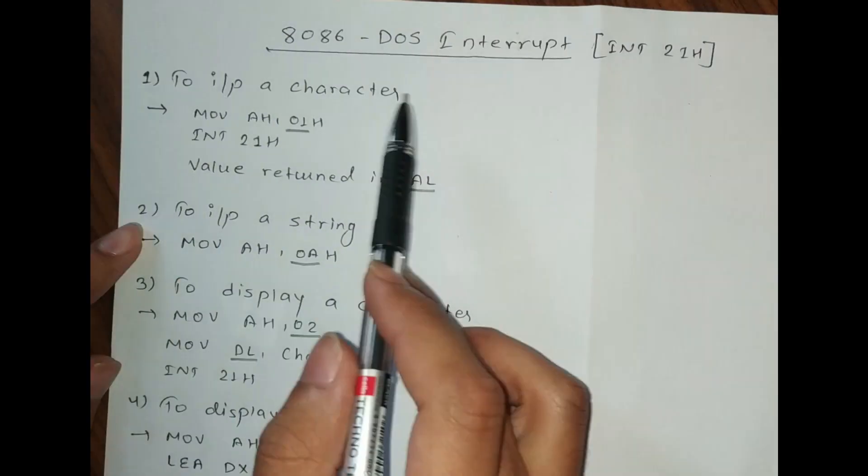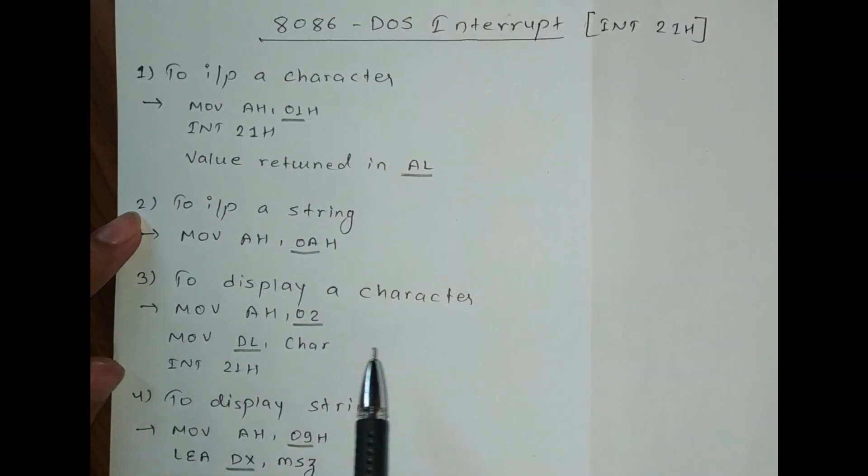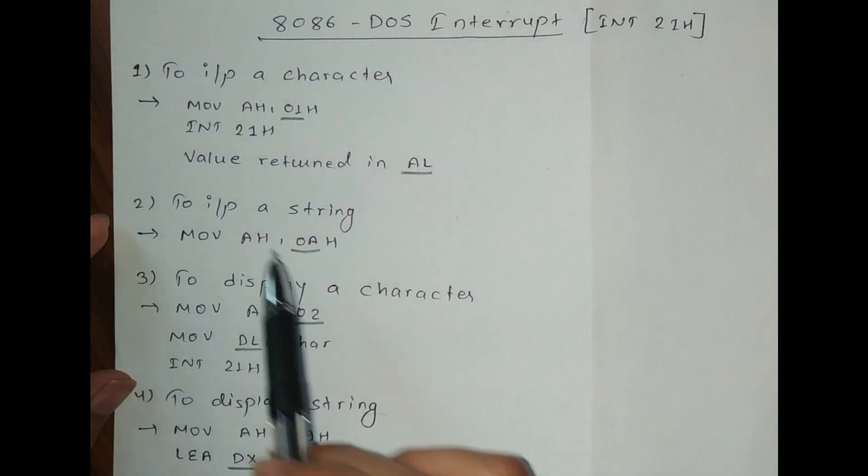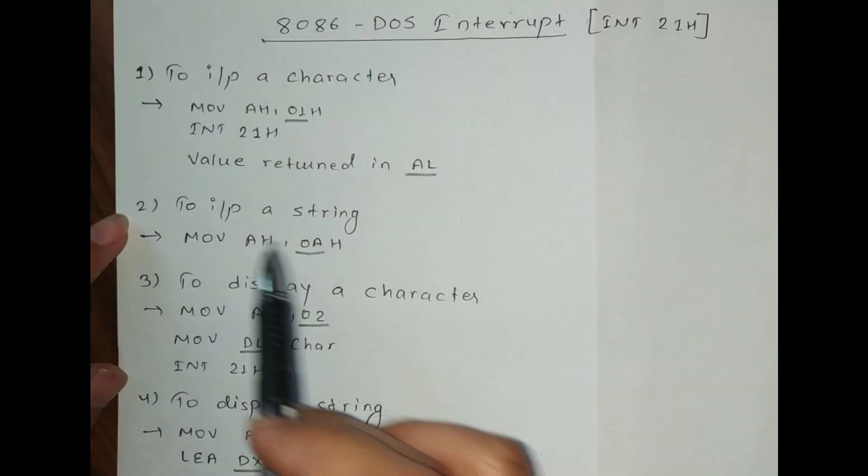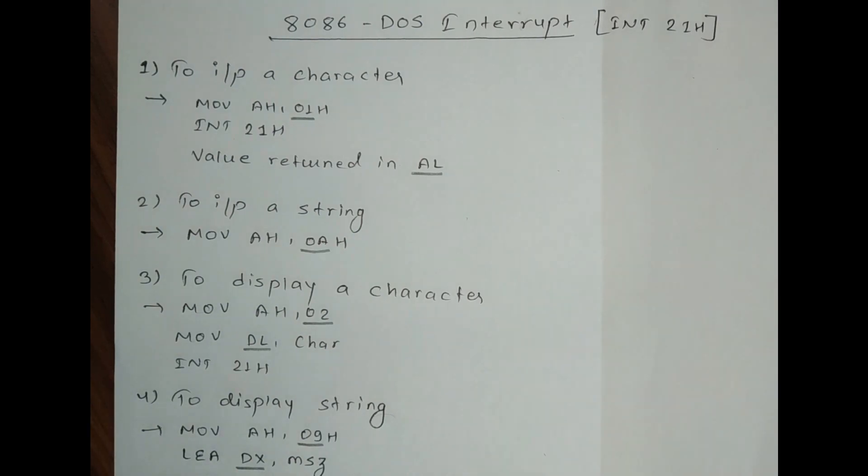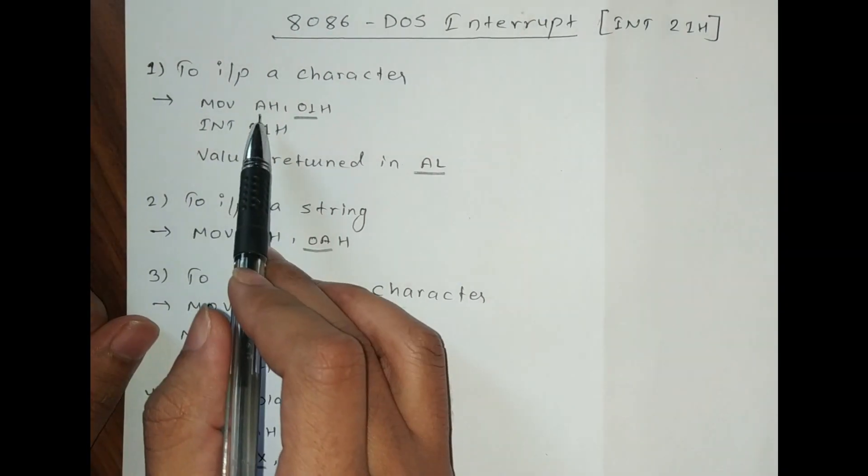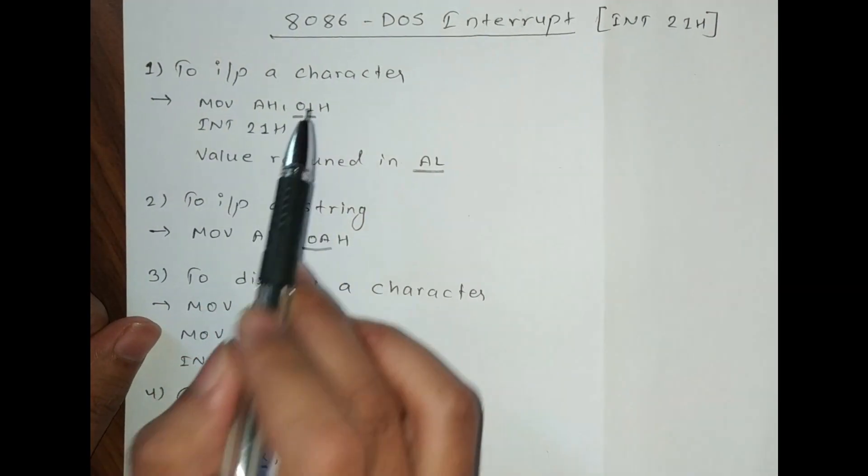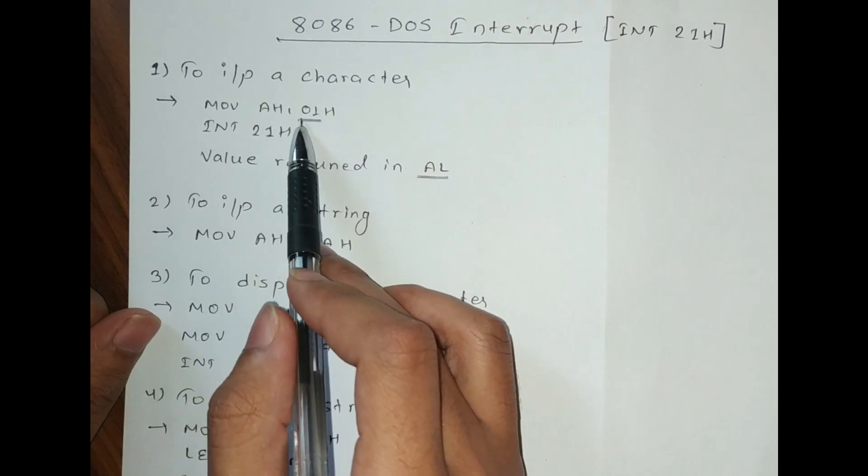By using INT 21H, we can do a lot of operations like input character, input string, display character, display string. The display is on the monitor and input is taken from keyboard. By using just INT 21H, how can we perform the different operations? For that, we have to check the AH register.